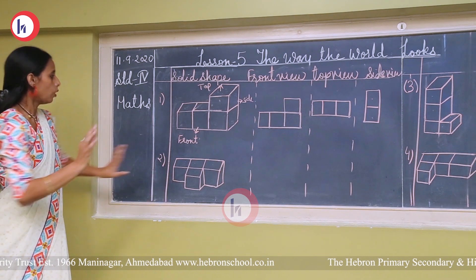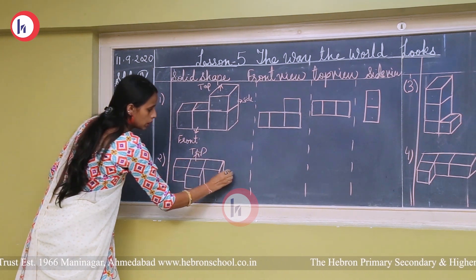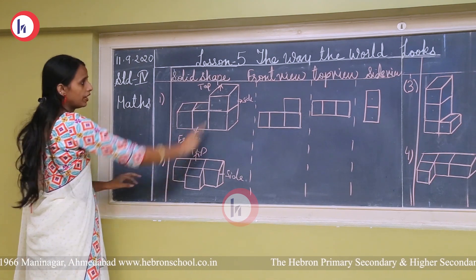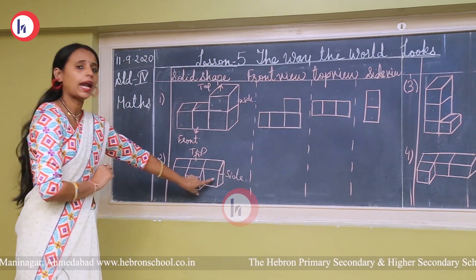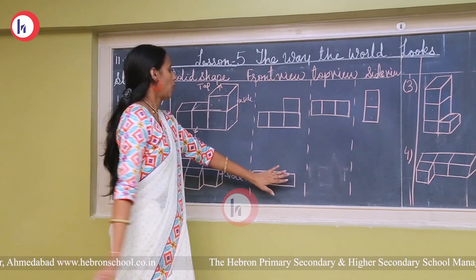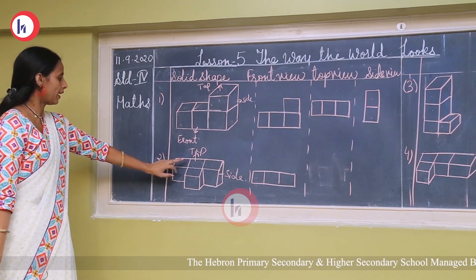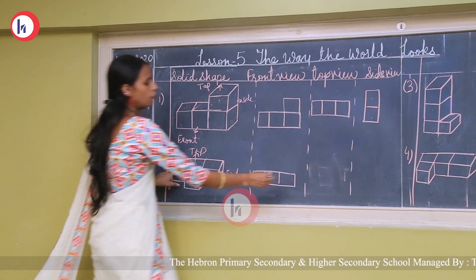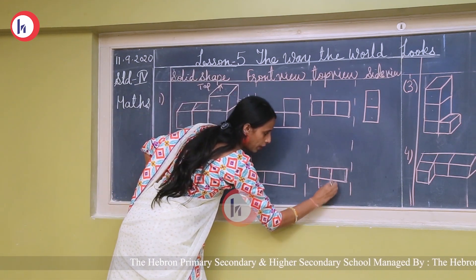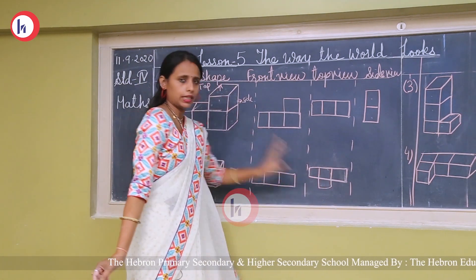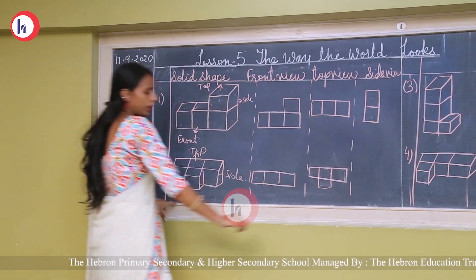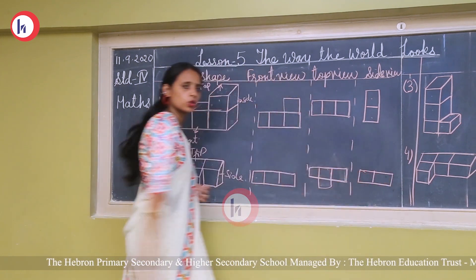Now for the second shape: this is the top view, this is the side, and this is the front view. Don't look at it as a solid shape — only look at the squares. For the front view, I can see 1, 2, and 3 squares, so I draw 3 squares. For the top view, from the top I can see 1, 2, 3 squares and one more — so 4 squares total. It looks like this. And for the side view, from the side only 1 and 2 squares are there, so I draw 2 squares.